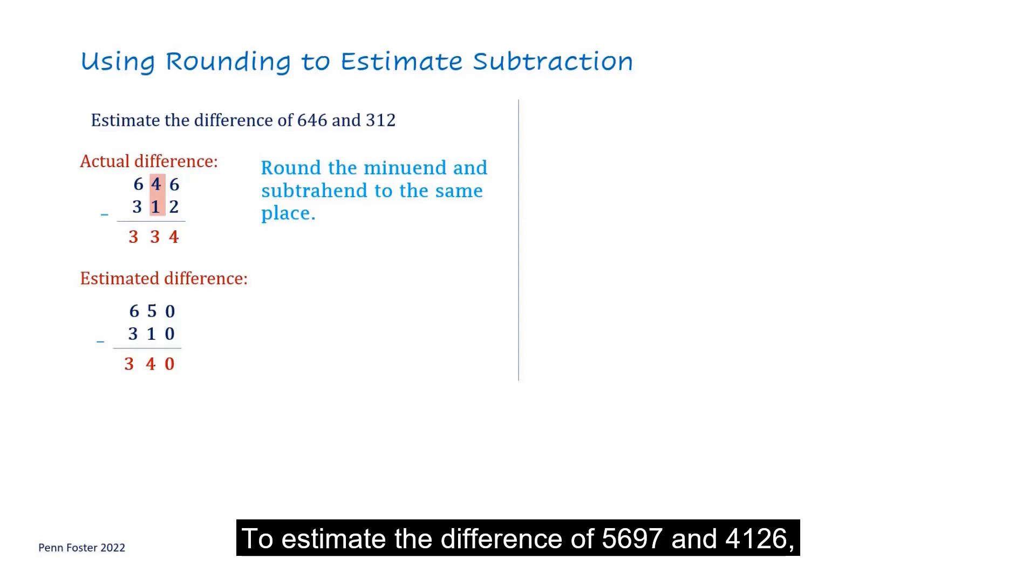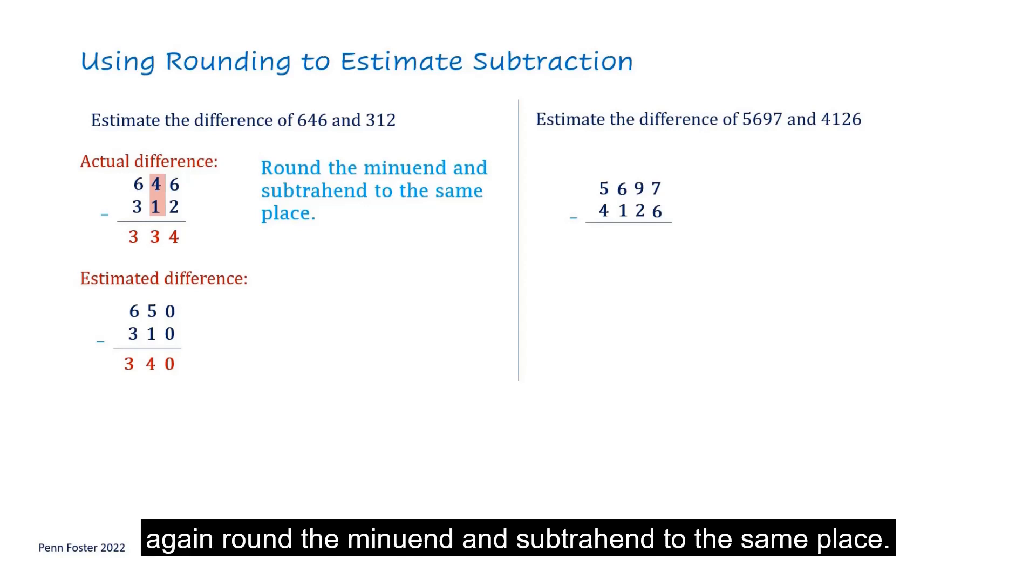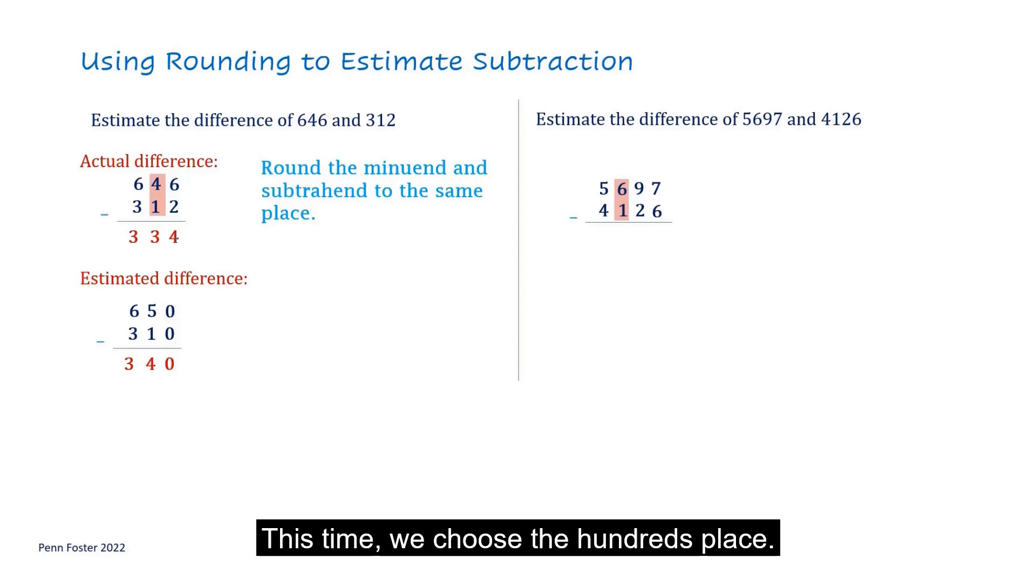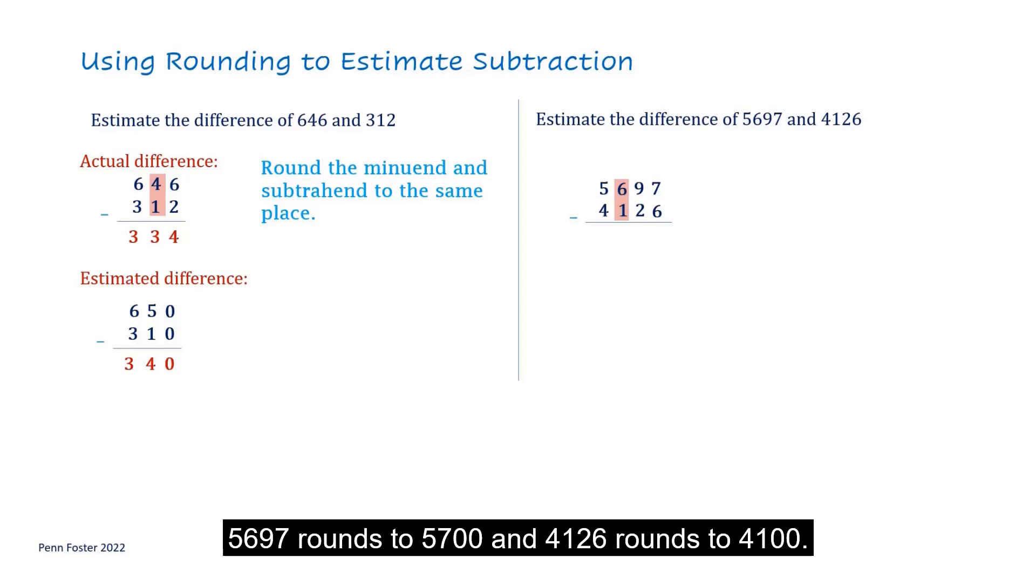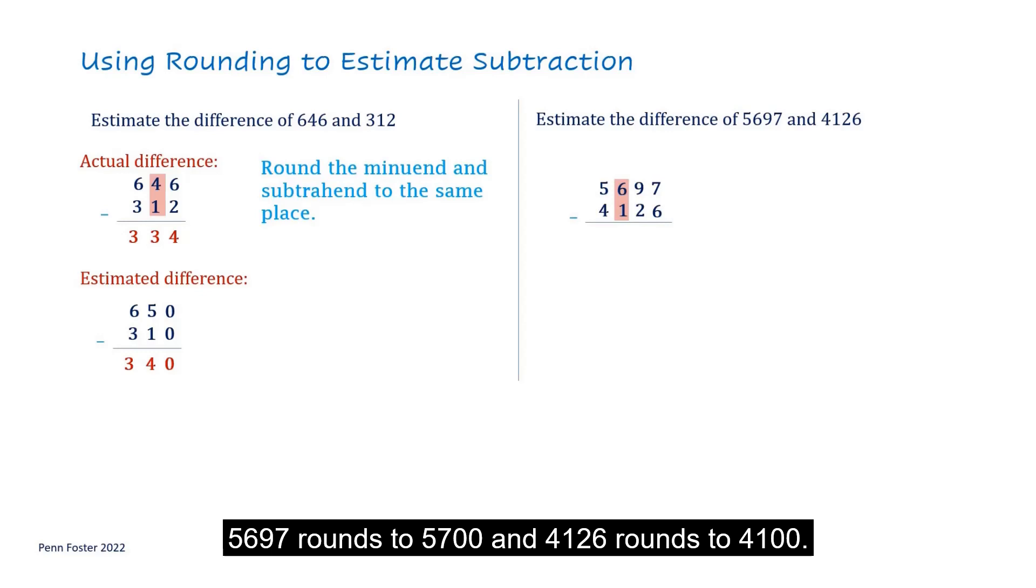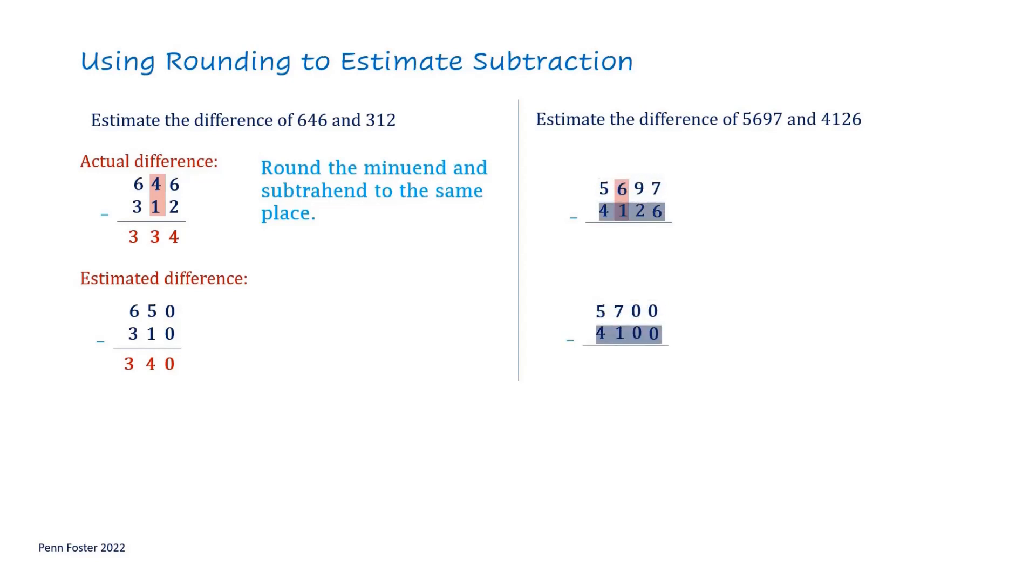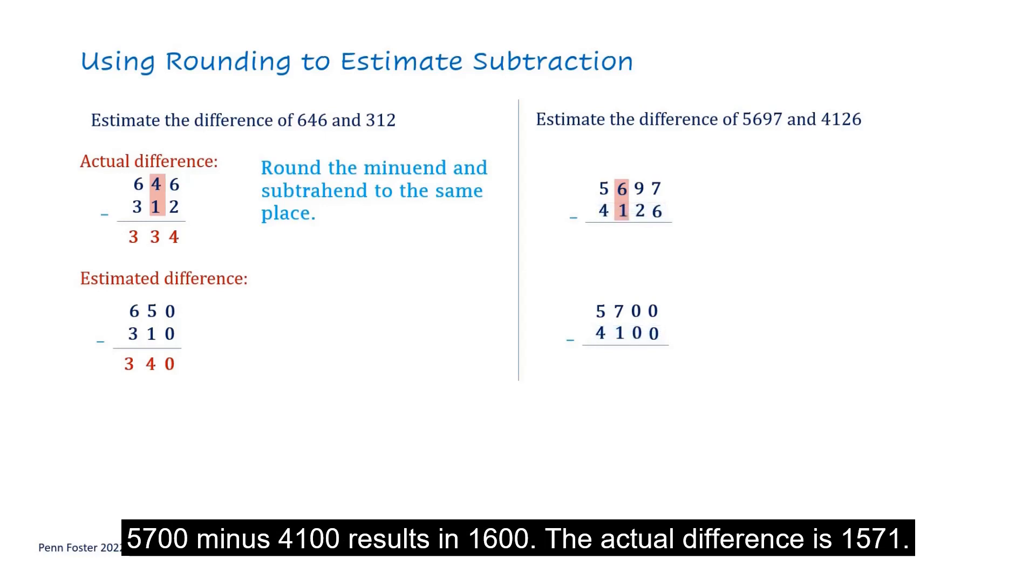To estimate the difference of 5,697 and 4,126, again round the minuend and subtrahend to the same place. This time, we choose the hundreds place. 5,697 rounds to 5,700 and 4,126 rounds to 4,100. 5,700 minus 4,100 results in 1,600. The actual difference is 1,571.